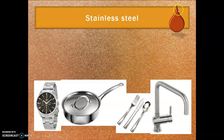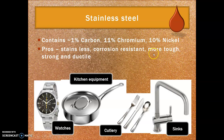Then we have stainless steel — I've got a little water droplet icon to remind you it's so corrosion resistant. It contains one percent carbon, eleven percent chromium, and ten percent nickel. It is used in kitchenware, anything that might get splashed with water, as well as surgical equipment. It's also tougher, stronger, and more ductile than regular steel, so it's used in a wide range of applications.